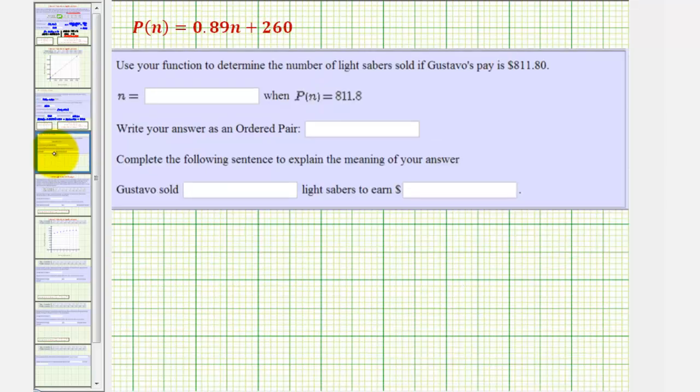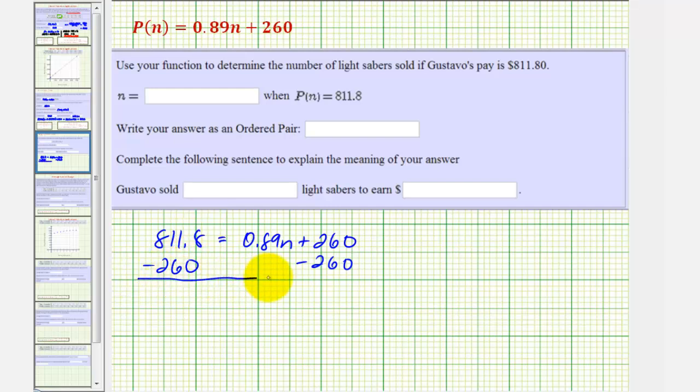Now for the last question, we're asked to use our function to determine the number of lightsabers sold if Gustavo's pay is 811 dollars and 80 cents. Which means p(n) equals 811.8, and we want to find n. We would have the equation 811.8 equals 0.89n plus 260. We'll subtract 260 on both sides. This gives us 551.8 equals 0.89n, so we'll divide both sides by 0.89.